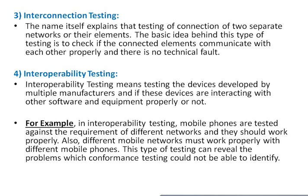Fourth is interoperability testing, which means testing devices developed by multiple manufacturers to check if these devices interact properly with other software and equipment. For example, mobile phones are tested against the requirements of different networks to ensure they work properly. Different mobile networks must also work properly with different mobile phones. This type of testing can reveal problems that conformance testing could not identify.